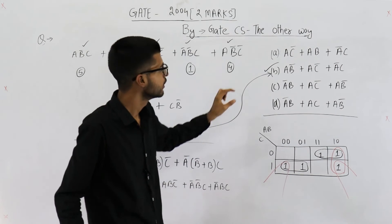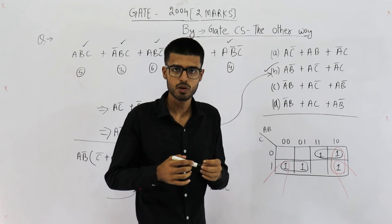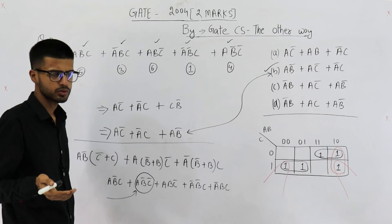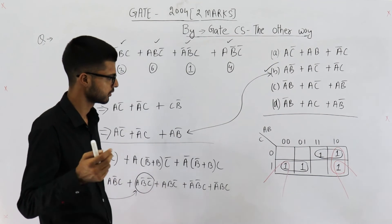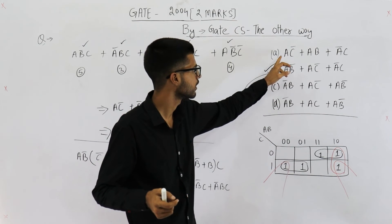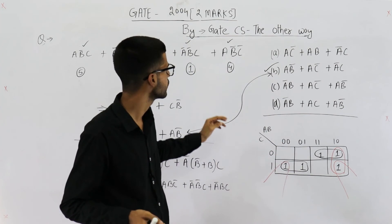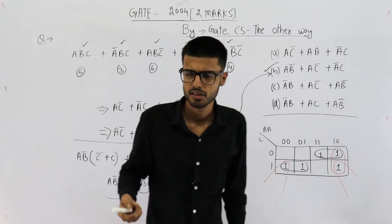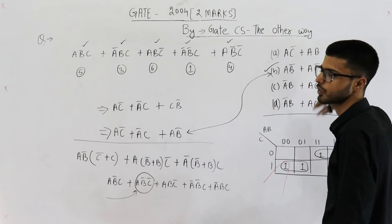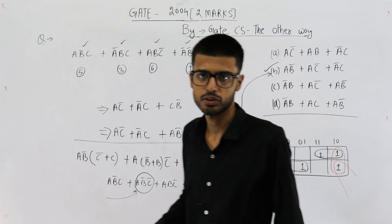Both expressions are exactly the same. Similarly, you can expand all options one by one to see which is correct. We solved it using both the K-map and by expanding the options. A third method is to draw the K-map for each option and compare — that's essentially the same as finding minterms for each option. Your answer is option B.